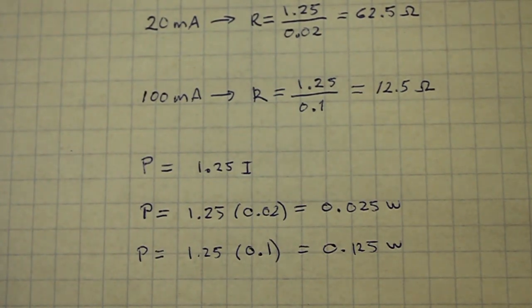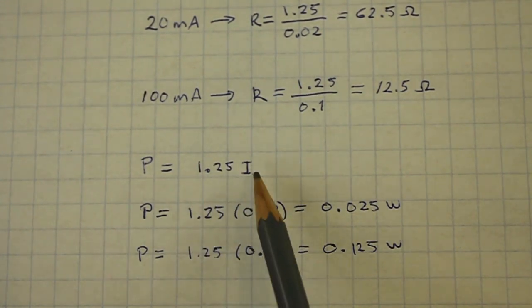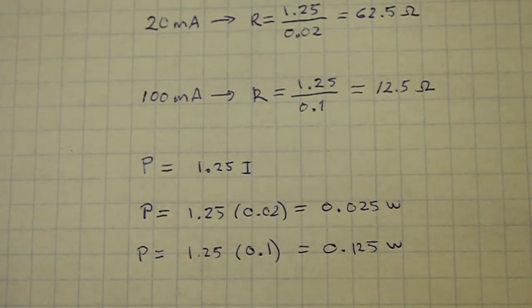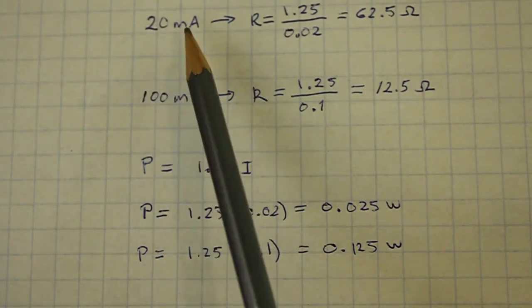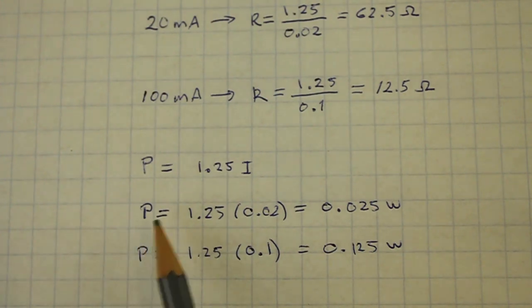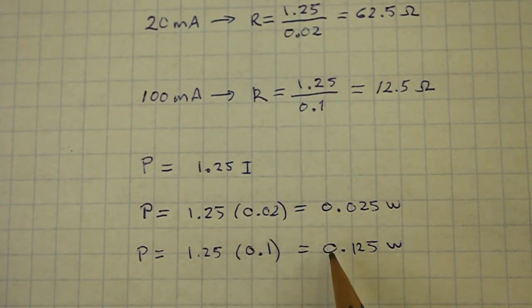The power on the resistor will be equal to 1.25 times the current. So, for example, in the 20 milliamps case, the power will be 0.025 watts and in the second case, with 100 milliamps of current, the power is 0.125 watts. So, in both cases, a half watt resistor is more than enough.